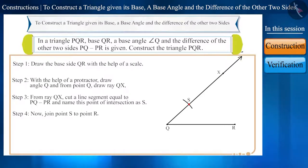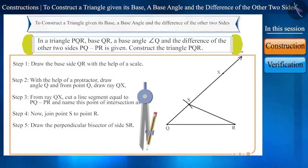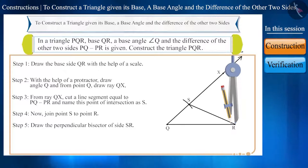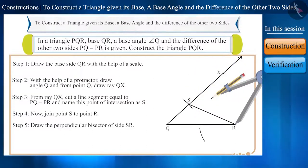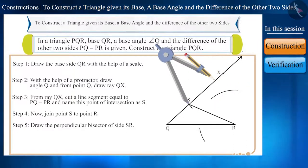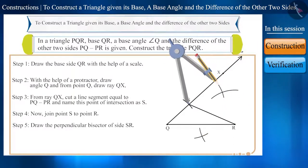Step 5. Next, with the help of a compass, we will draw the perpendicular bisector of side SR. We have learned about the construction of a perpendicular bisector in the first session of the construction topic.